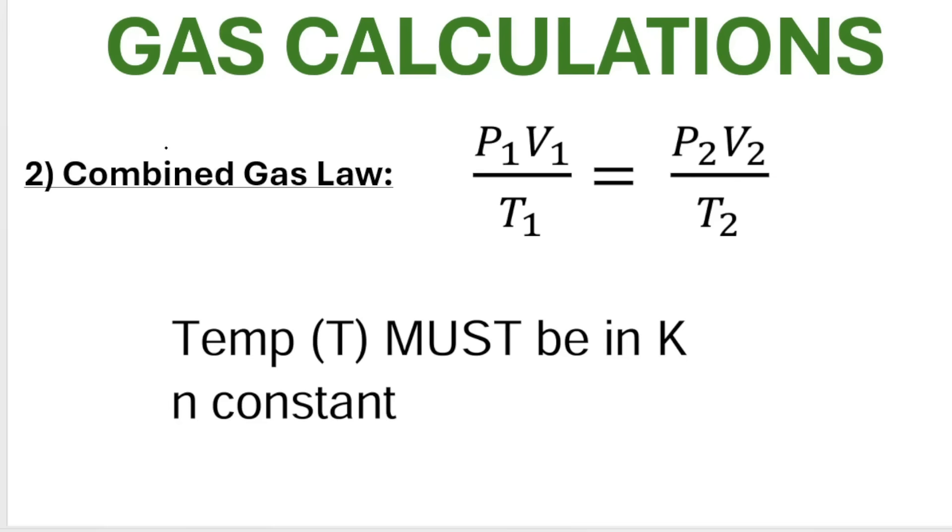Then we've got the combined gas law: P1 times V1 divided by T1, where T1 is temperature, T2 is temperature, and it's measured in Kelvin. And in this case, when we use the combined gas law, N number of moles is constant.